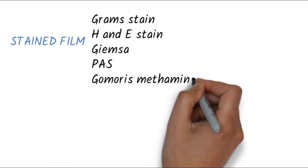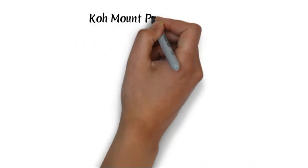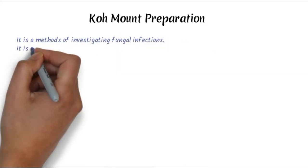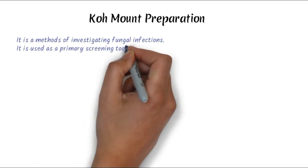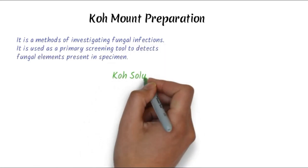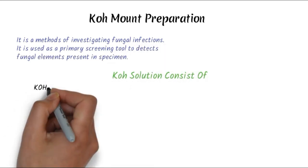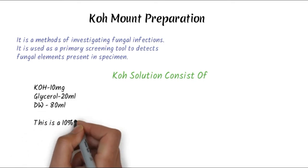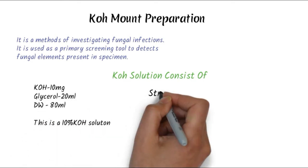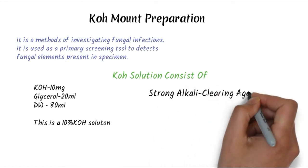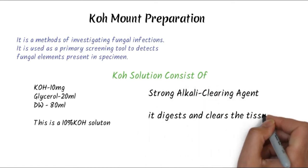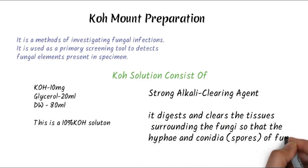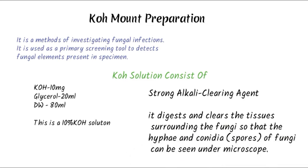KOH mount is a method of investigation for fungal infection. It is used as a primary screening tool to detect fungal elements present in the specimen. KOH consists mainly of KOH, glycerol, and distilled water. We mainly use 10% KOH. KOH is a very strong alkaline clearing agent — it digests and clears the tissue surrounding the fungal elements so that the hyphae and spores are visible under the microscope.